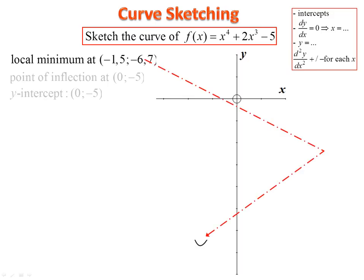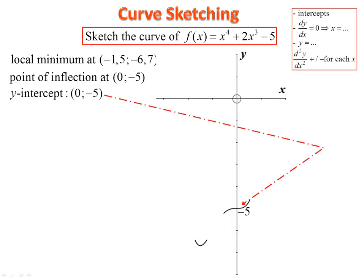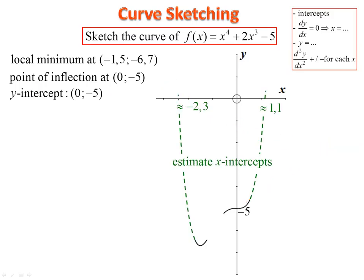Let's take this information and put it on the Cartesian plane. There's the local minimum, point of inflection at (0, −5), and the y-intercept at the same point. The curve must come from up left, down to the minimum, back up through the inflection and then upward again. From the sketch we can estimate the x-intercepts at approximately 1.1 and negative 2.3.